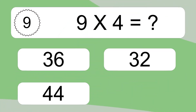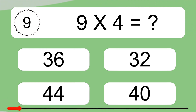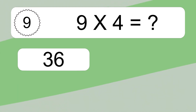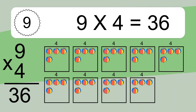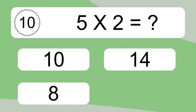9 times 4 equals what? 9 times 4 equals 36. We have 9 boxes, and each box has 4 colorful balls inside. If you count all the balls in all the boxes together, you will have 9 times 4 balls. This equals 36 balls.